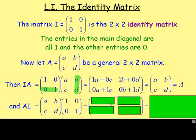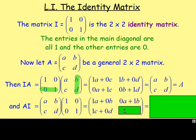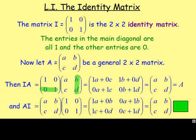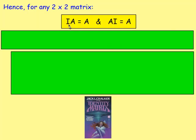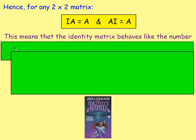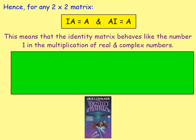Similarly, if we did that, we would end up with 1 times A and 0 times B, 0 times A and 1 times B, 1 times C and 0 times D, and 0 times C and 1 times D — working out the same way. That again just gives us A, B, C, D. So for any 2x2 matrix, I times A gives us A, and A times I gives us A. This means the identity matrix behaves just like the number 1 — when you multiply by 1, whatever you're multiplying stays as it is. And it's the same for matrices with the identity matrix.